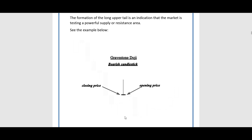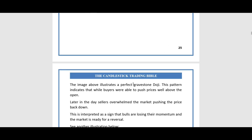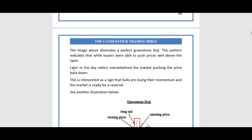In the dragonfly doji illustration we have a long lower tail, but now we have a long upper tail where the tail is at least three or four times the size of the real body. The real body is right here — the open and the close — and this real body can fit into the tail at least four times or more. The image above illustrates a perfect gravestone doji.